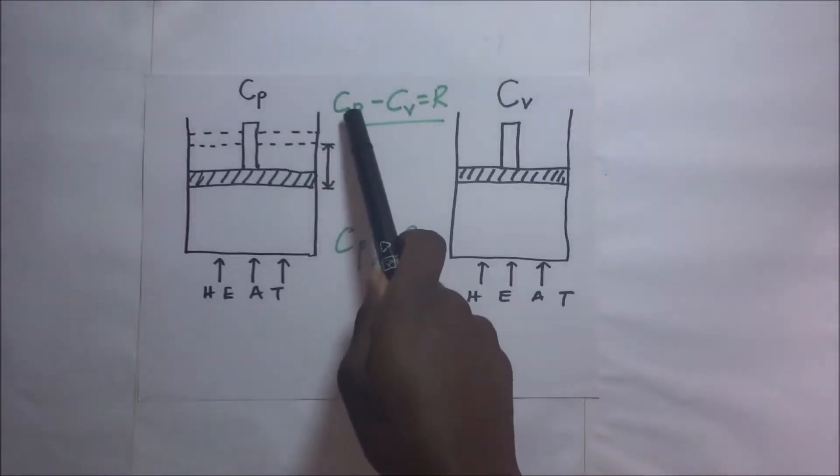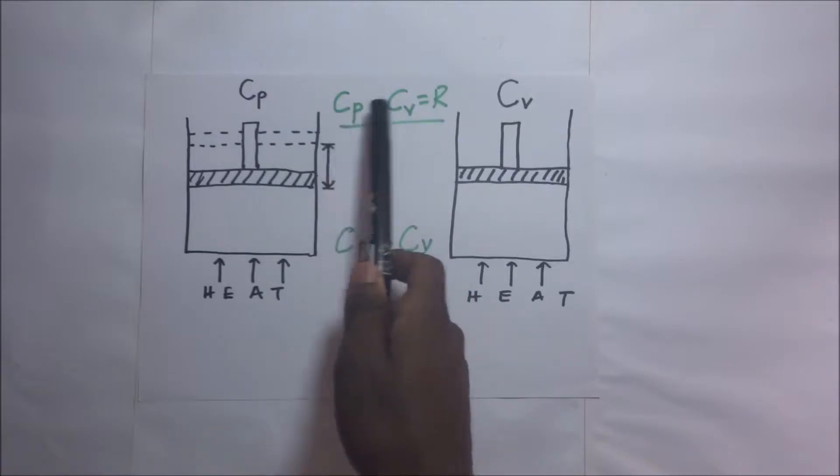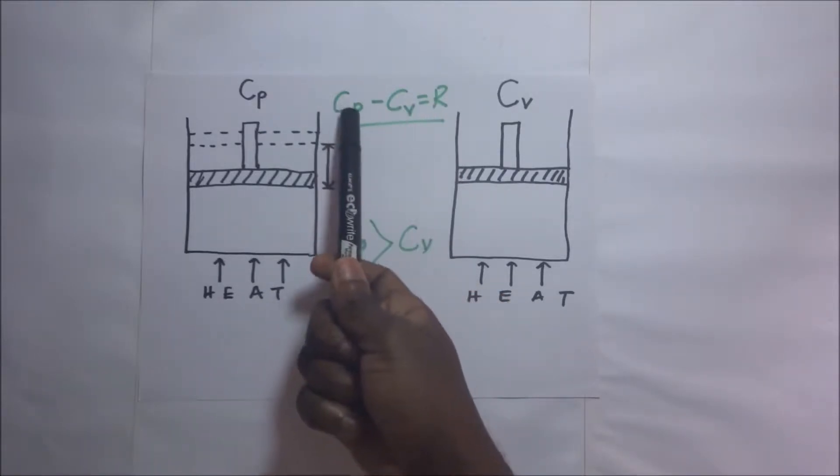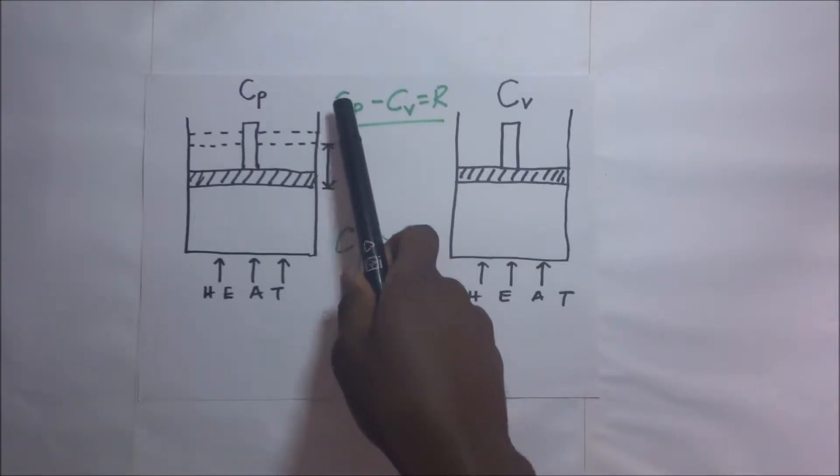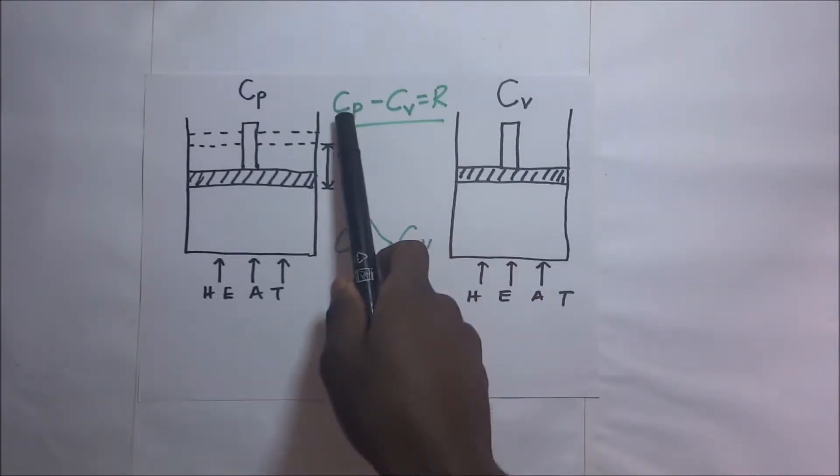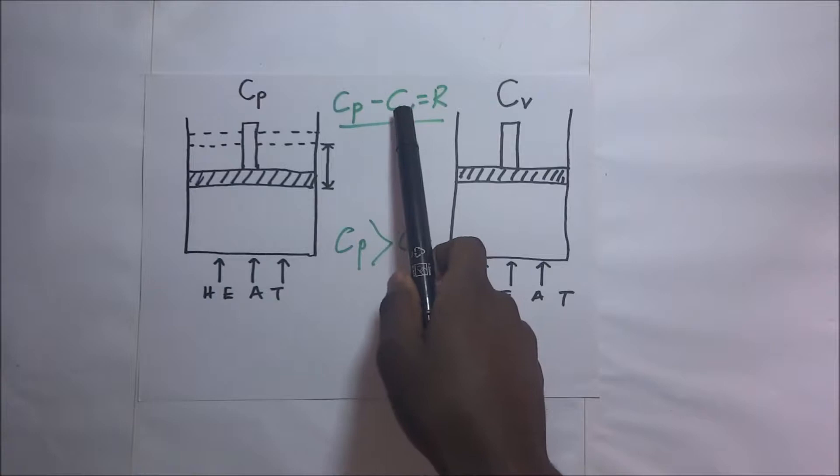In our previous session, we derived CP minus CV is equal to R. We were able to show this. And from this expression, you can see that CP is definitely greater than CV. By the time you're able to say that CP minus CV is equal to R, it means that CP is greater than CV.